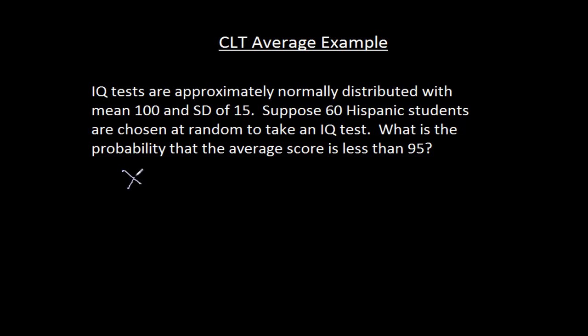Okay, so we have 60 students, and my random variable X_i is going to be the score of the i-th student on the IQ test. And what I'm concerned about is the average score. So that would be X_1 plus X_2 plus all the way up to X_60 divided by 60.